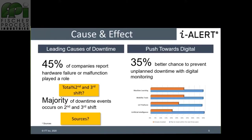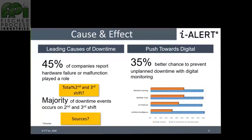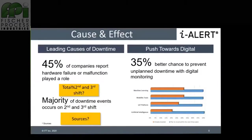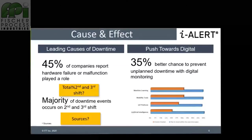In the digital age, what we're trying to do is push towards preventing unplanned events. Digital technologies can help prevent about 50% of downtime events. However, in the market today, we find that only 35% of cases can be prevented. There will always be an element of unplanned downtime you cannot predict — such as natural disasters — but the goal is to reach 50% prevention or more.